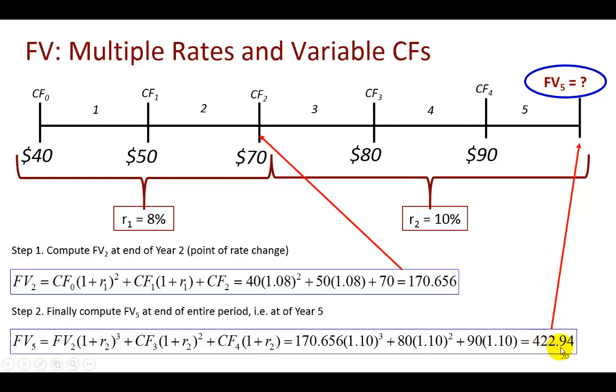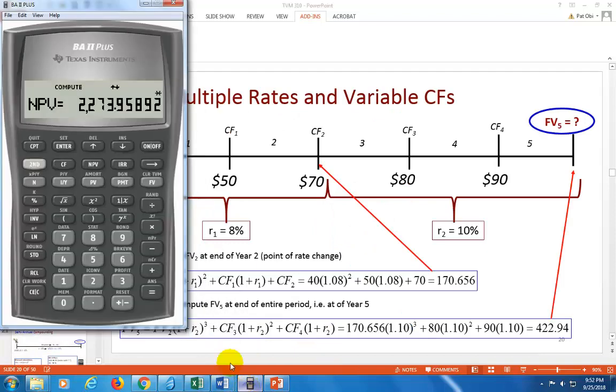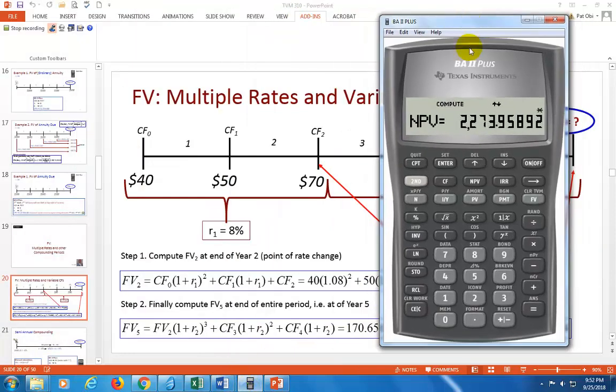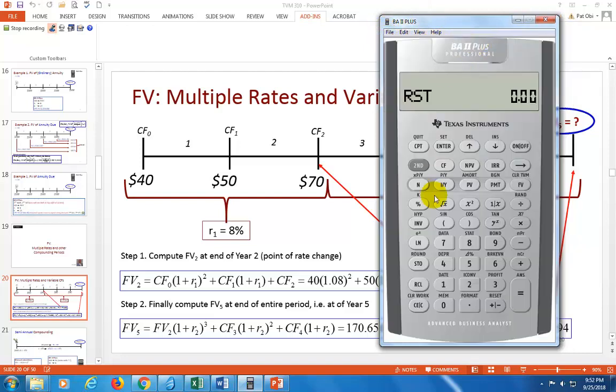And you can also use your BA II Plus to accomplish this task quite easily by using the net future value function. But for you to do so, you're going to have to use the professional version because that's the version equipped with the computation of future value for multiple cash flows. So, for example, now I'm going to switch this to five decimal places. That's kind of how I like seeing it. But anyhow, so now second clear TVM, second clear work. But more importantly, hit the CF register and hit second clear work.